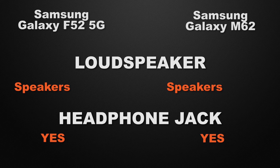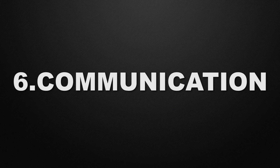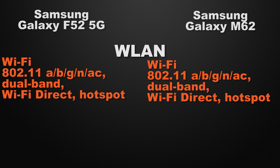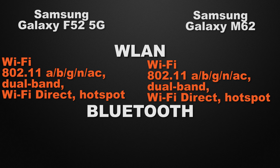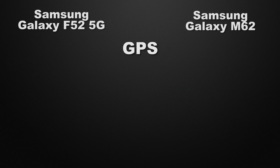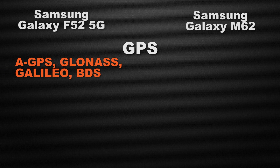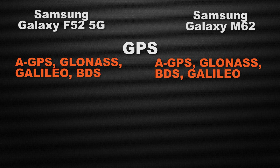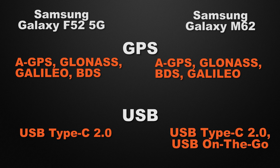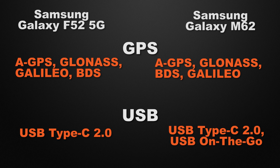About charging speed, both the F52 and M62 support 25W fast charging, so it's a tie. Both devices come with normal speakers and a 3.5mm headphone jack, so both are a tie. Moving to communication chips, both devices come with Wi-Fi ac, dual-band Wi-Fi, Wi-Fi Direct, and hotspot support, so it's a tie. Both have fifth-generation Bluetooth, so it's a tie. For positioning, both have GPS, GLONASS, Galileo, and BDS. About USB, both have USB Type-C 2.0, but the M62 also has OTG support, so the winner is the M62.